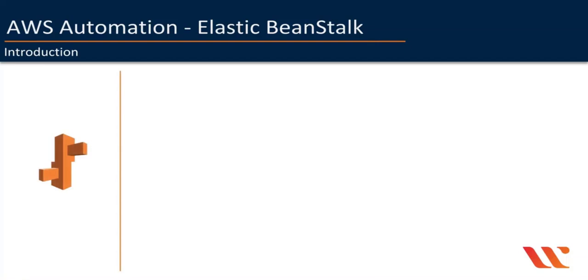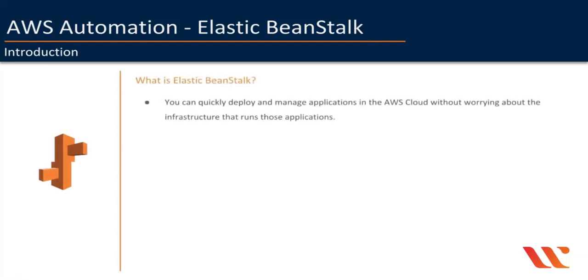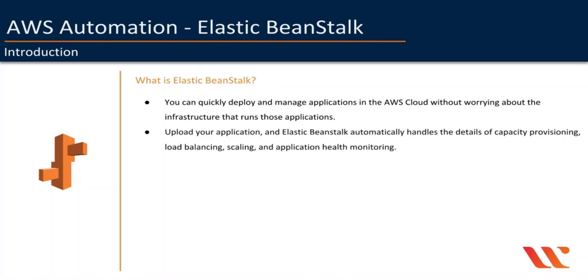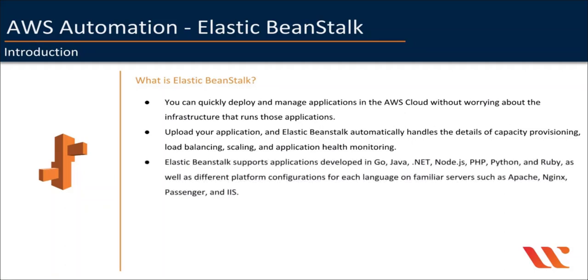So what is Elastic Beanstalk? Elastic Beanstalk is an easy to use service for deploying and scaling web applications. You can quickly deploy and manage applications in AWS cloud without worrying about the infrastructure that runs those applications. It reduces management complexity without restricting your choice or control on the application. You simply need to upload your application and Elastic Beanstalk automatically handles the details of capacity provisioning, load balancing, scaling, and application health monitoring.